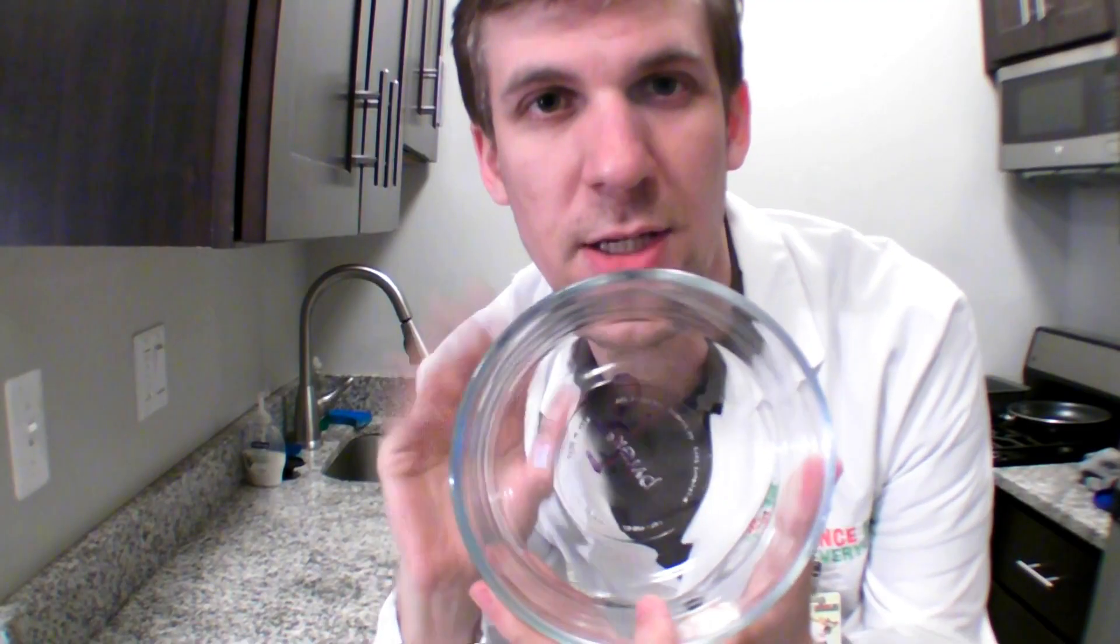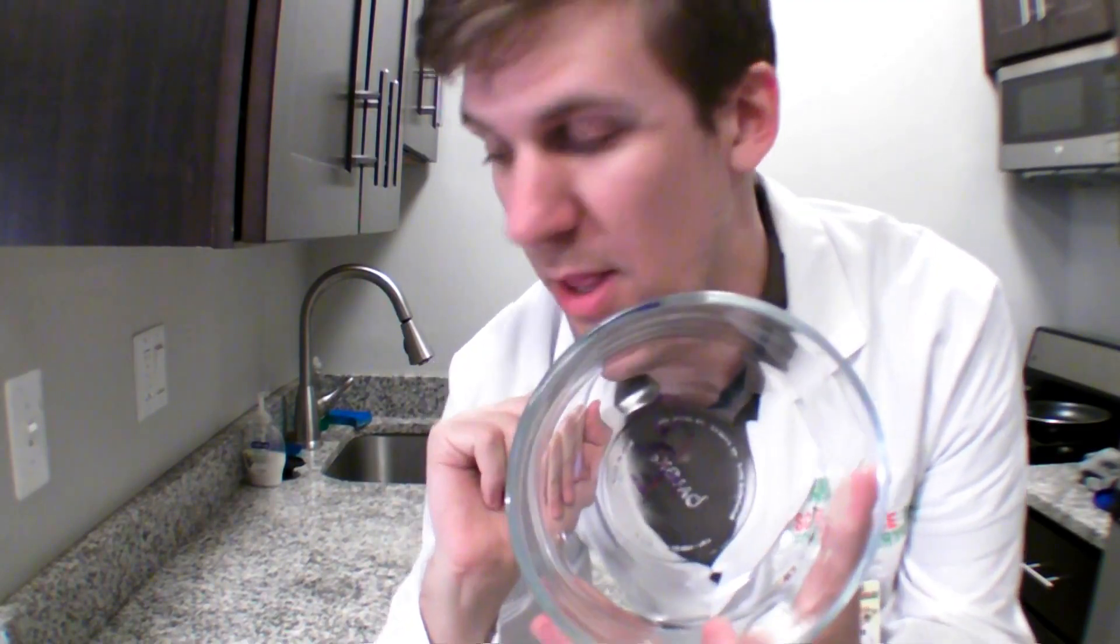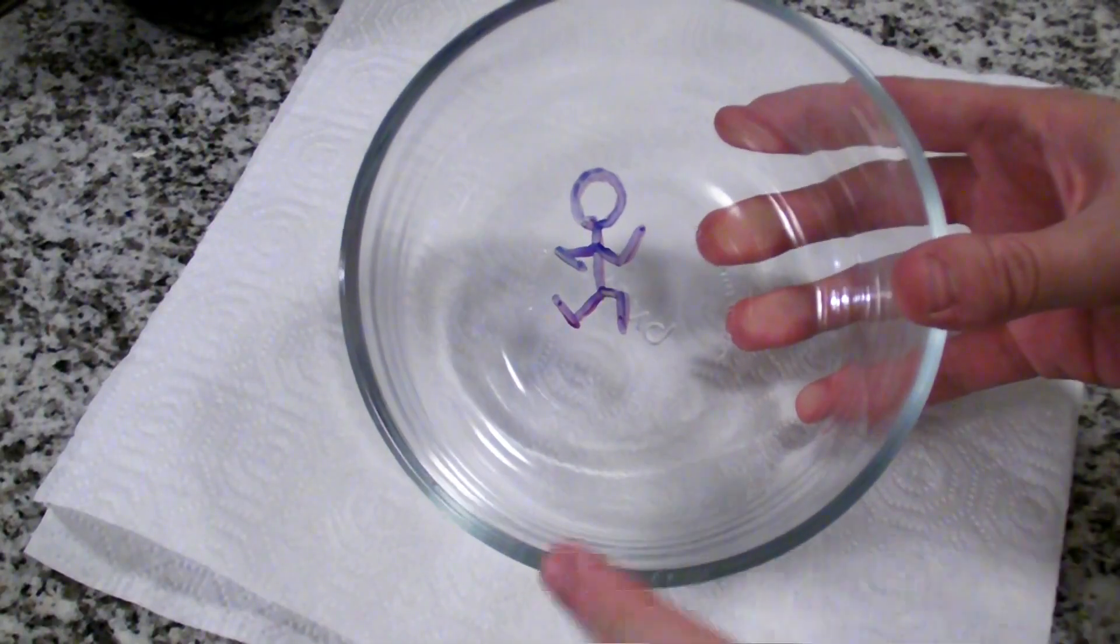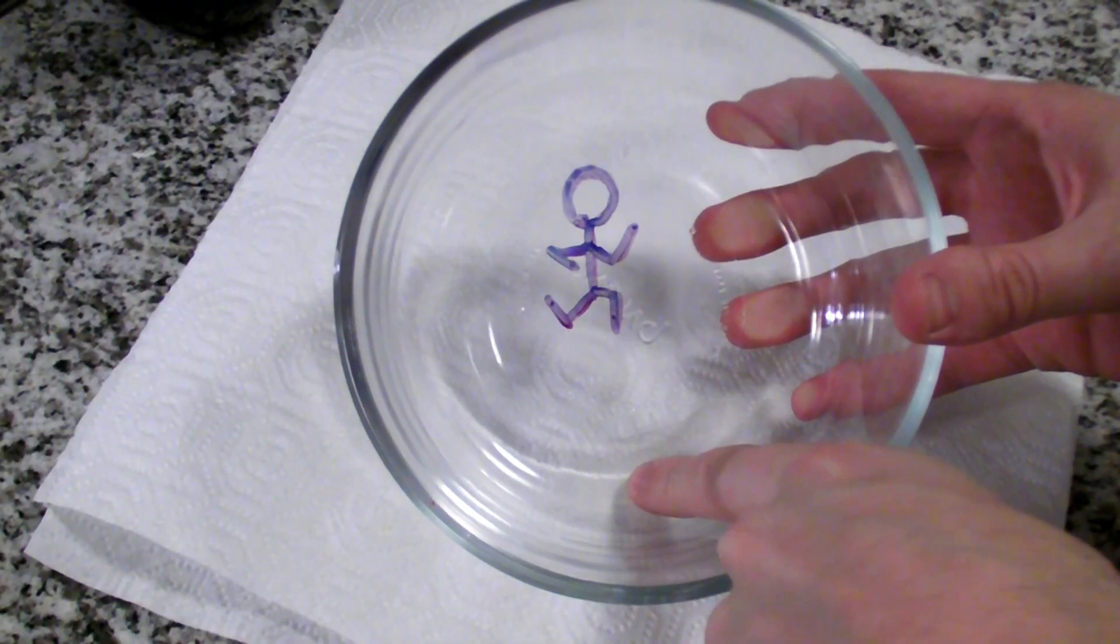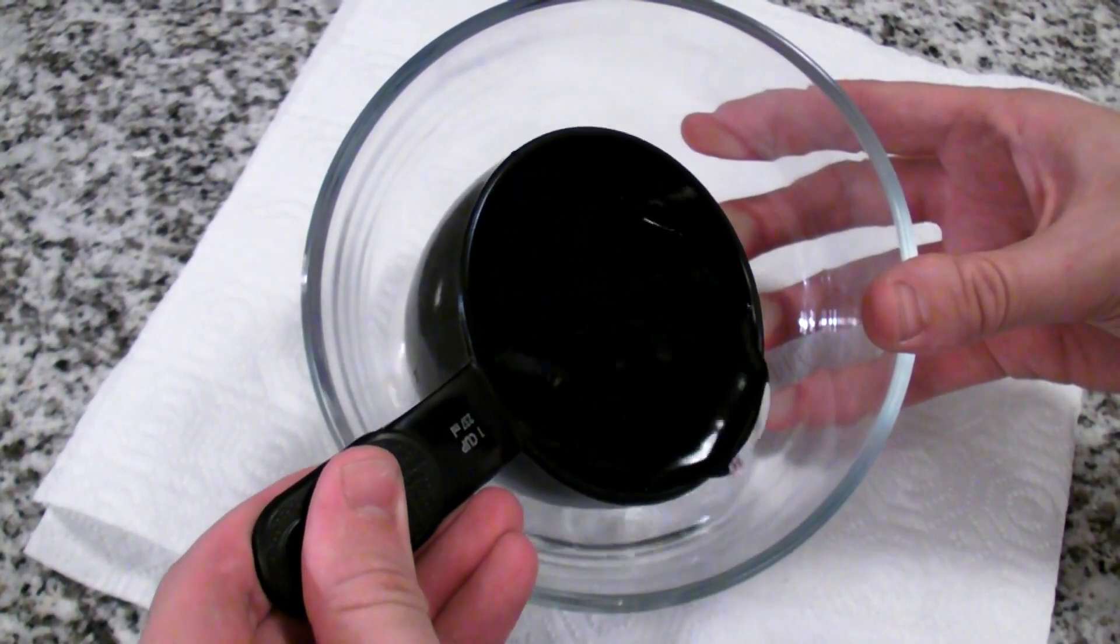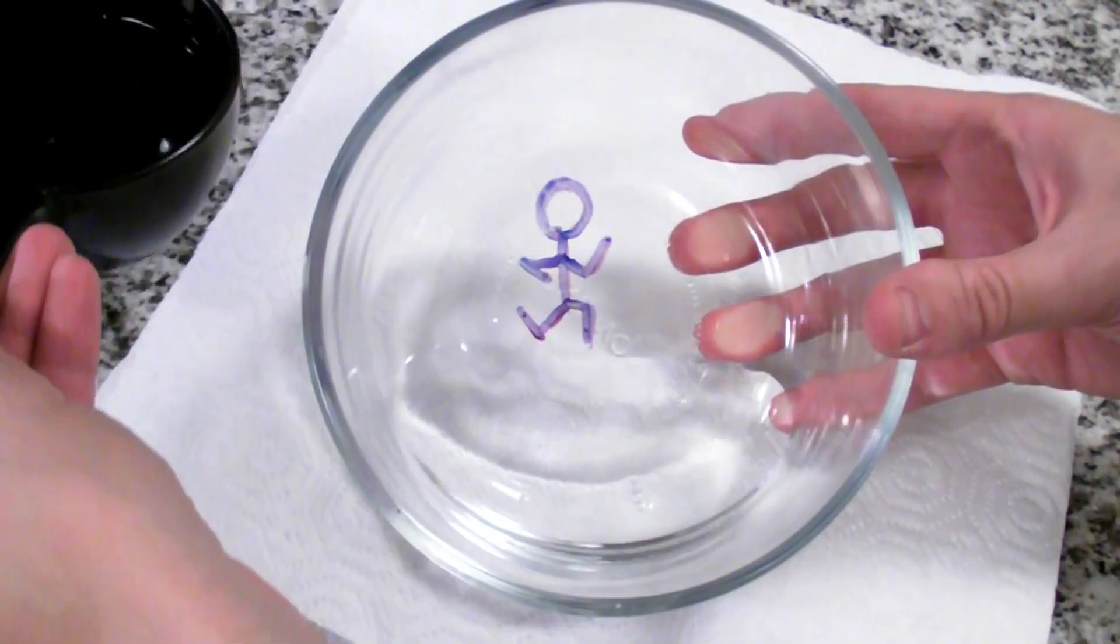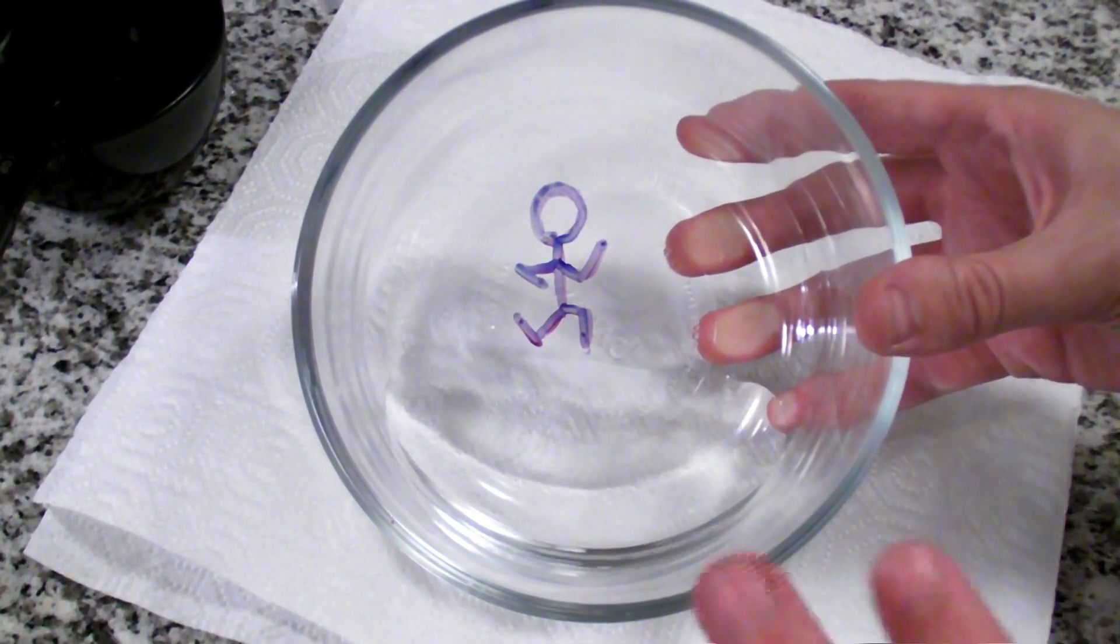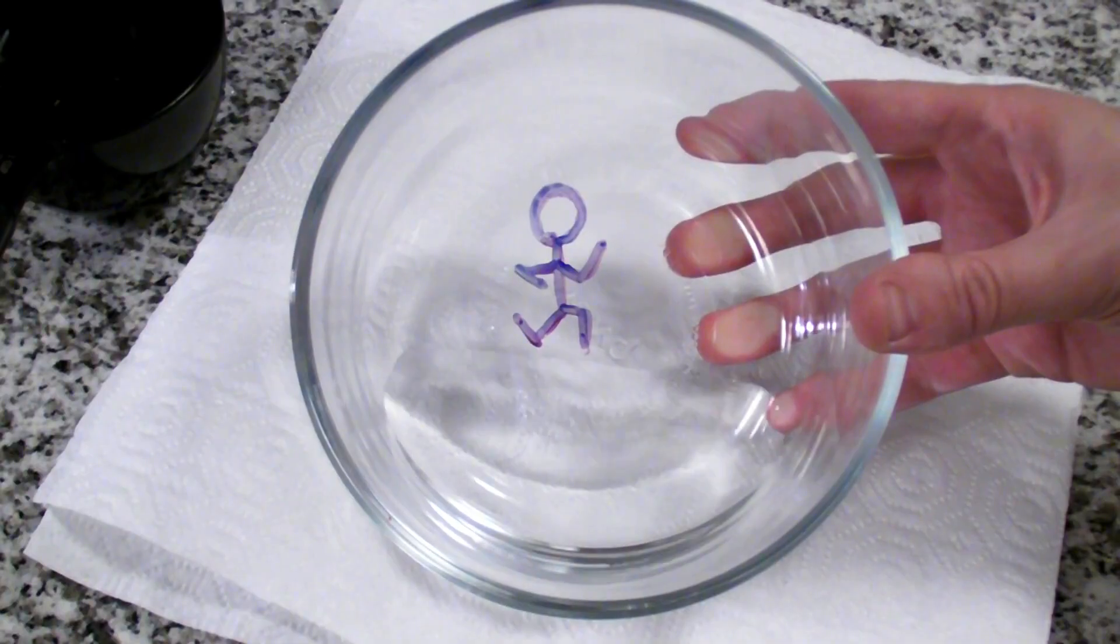And we can actually get that solid to come off of the glass with water. Tip your bowl over to the side a little bit, and then we're gonna pour water in this area away from our drawing. Then slowly we're gonna tip the bowl so that the water actually goes under the drawing.